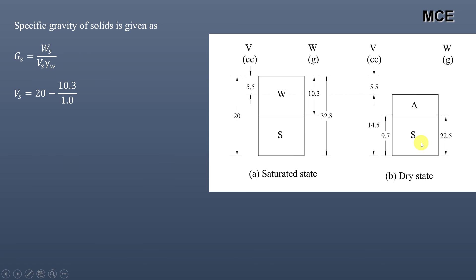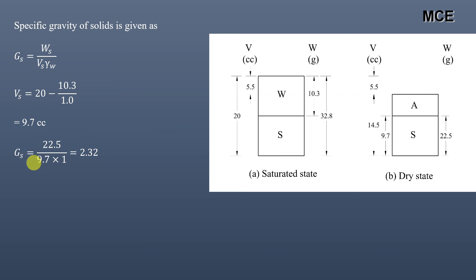The volume of solids = total volume (20) minus volume occupied by water, which equals weight of water divided by γw = 10.3 / 1 = 10.3 cm³. So Vs = 20 − 10.3 = 9.7 cubic centimeters. Therefore Gs = 22.5 / (9.7 × 1) = 2.32, which matches the value obtained using the direct formula.